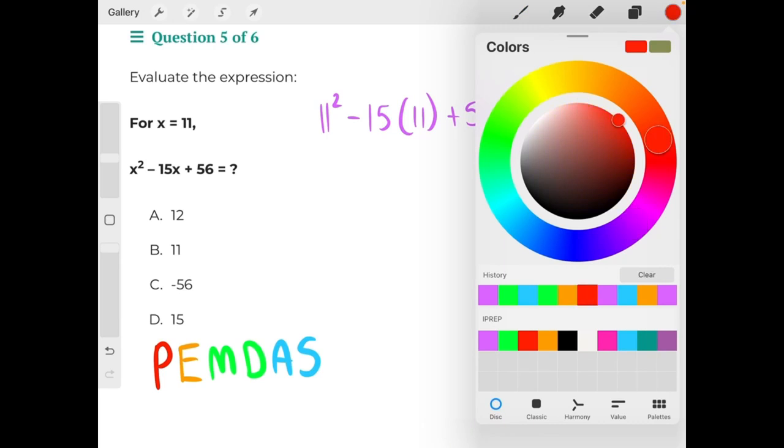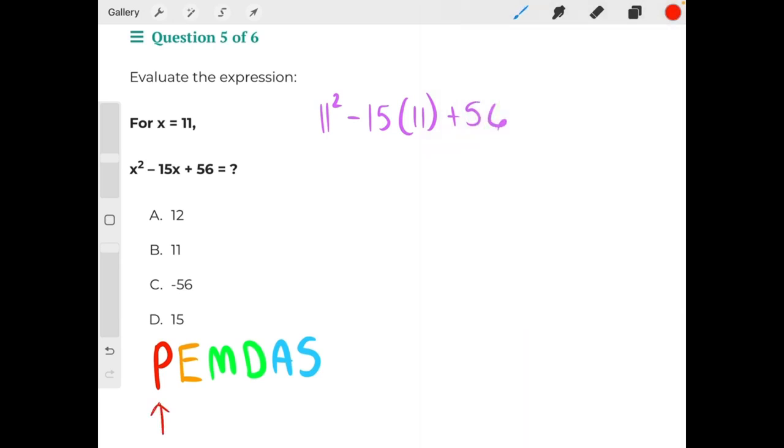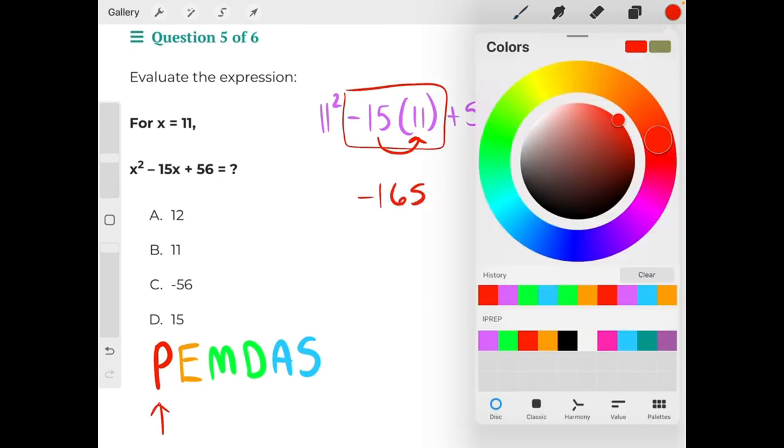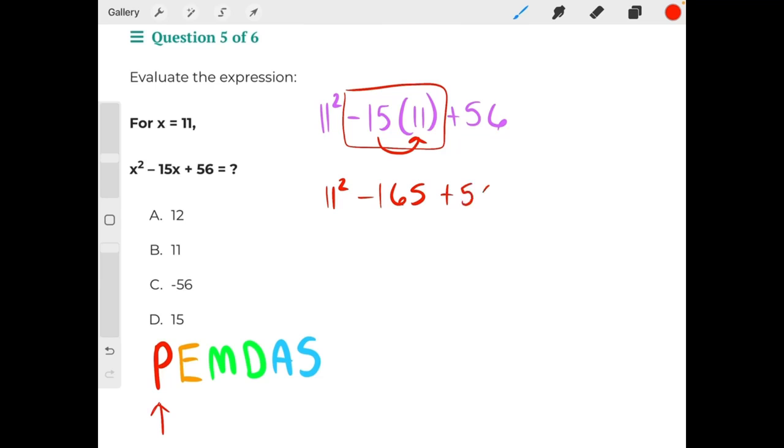The first step in our order of operations is P for parentheses, so we would start here in the middle of the equation. Negative 15 times 11, distributive property with those parentheses, would give us negative 165. Bring down the 11 squared and the positive 56.